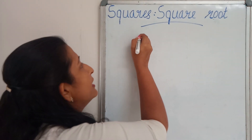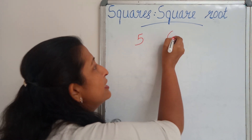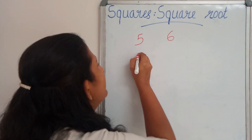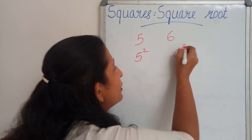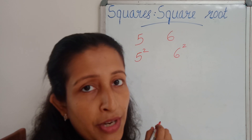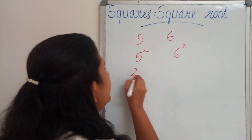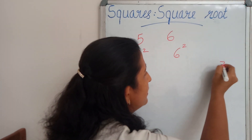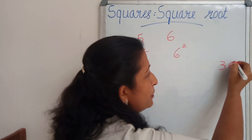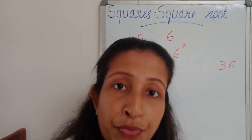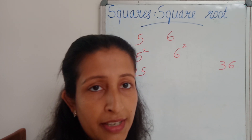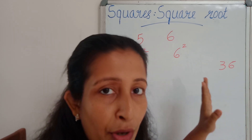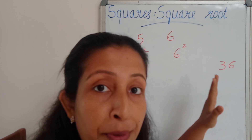Take 5 and 6. I am going to find the square of each natural number, that is 5 square and 6 square. What is the value of 5 square? 5 into 5 means 25. What is 6 square? 6 into 6, that is 36. In between these two square numbers, we cannot find any other square numbers. That means in between 25 and 36, there are natural numbers but they are not perfect squares — non-perfect square numbers.